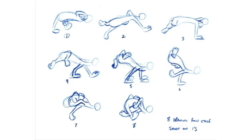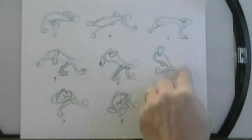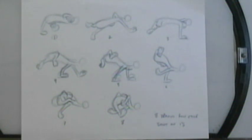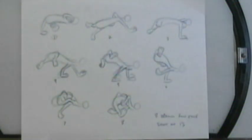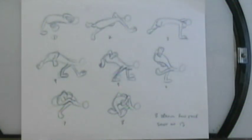Here are some pieces of animation from a Sylvester and Tweety cartoon. This is Sylvester, and this is an eight-drawing run cycle — the whole thing was done on ones. I just went through in single frame and did a quick sketch of the positions of the arms, legs, and body. I'm looking for line of action, the S curve, the C curve, how the different parts of the body move — just plotting it all out to see what's going on.